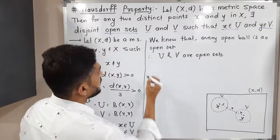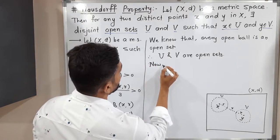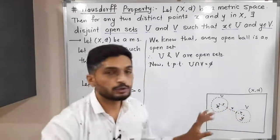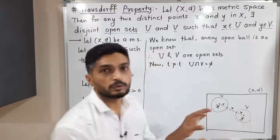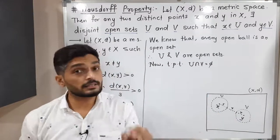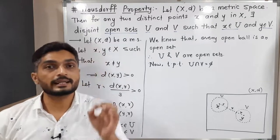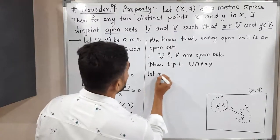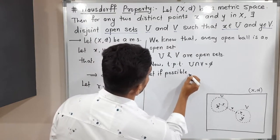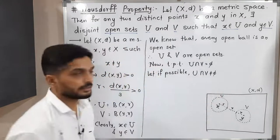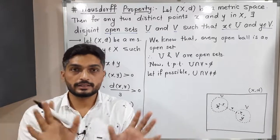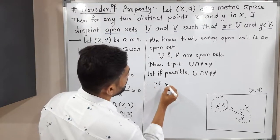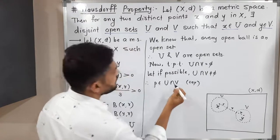Now we need to prove that U and V are disjoint, i.e., U ∩ V = ∅. We will use a proof by contradiction. Let us assume, if possible, that U ∩ V ≠ ∅, meaning they are not disjoint and share some common point. Since the intersection is non-empty, we can find some point p ∈ U ∩ V.